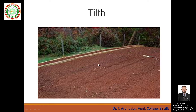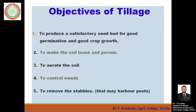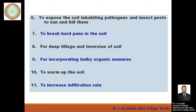The objectives of tillage are: to produce a satisfactory seedbed for good seed germination and crop growth; to make the soil loose and porous; to aerate the soil; to control weeds; and to remove the stubbles of the previous crop, which may harbour pests and diseases. Tillage also helps to expose soil-inhabiting pathogens and insect pests to the sun to kill them, and to break hard pans in the soil.